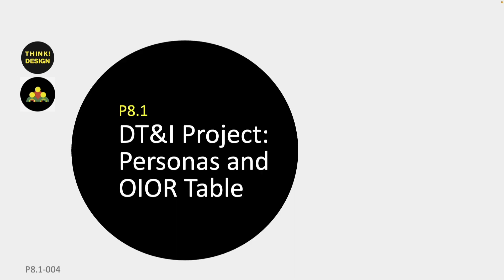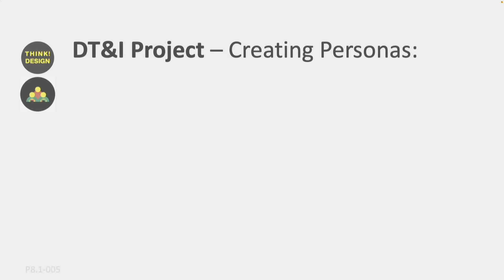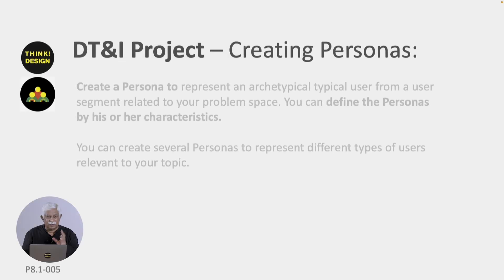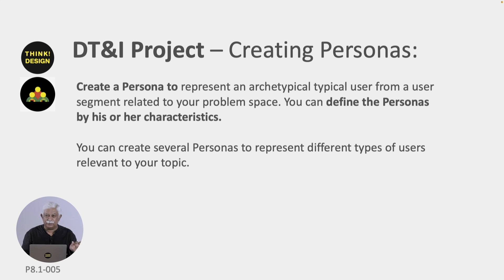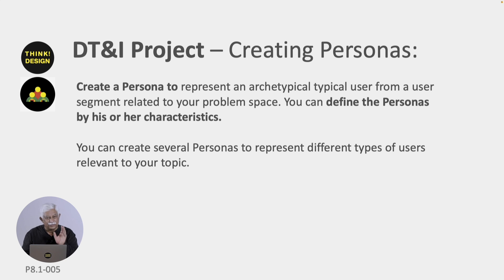The project involves creating personas and an OI OR table with respect to the topic that you have done, and also with respect to both the secondary research and the primary research, as well as the analysis done till now. You need to create a persona to represent a typical user from your user segment, related to your problem space. You can define the personas through his or her characteristics, and you can also create several personas to represent different types of users.